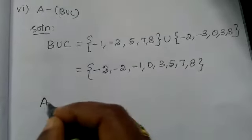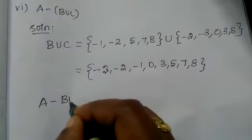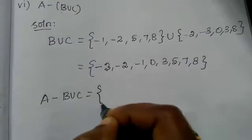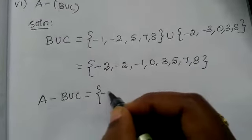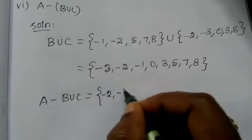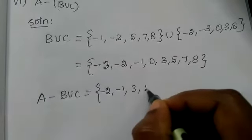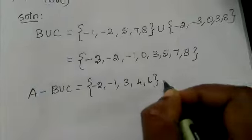Now A difference (B union C). Now A elements are what? Minus 2, minus 1, 3, 4, 6. Difference.